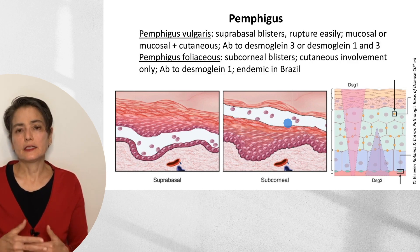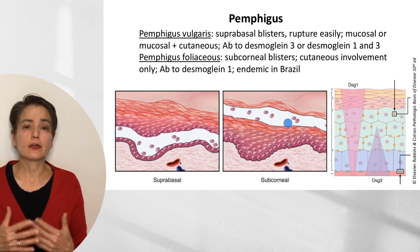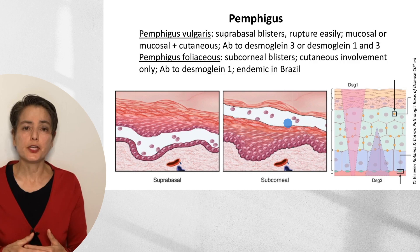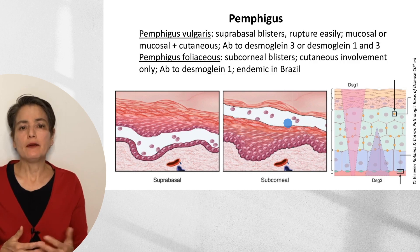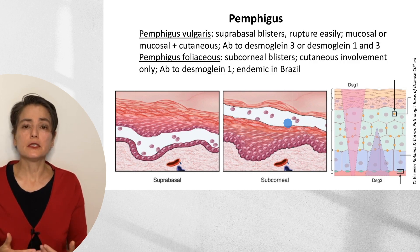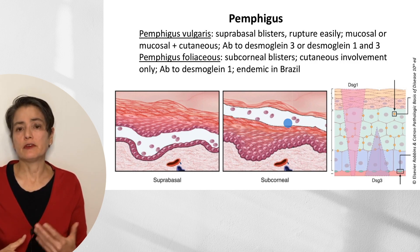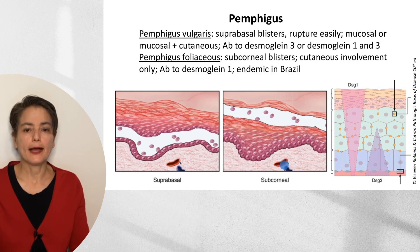One thing to know about these diseases is that they have a global distribution. However, pemphigus foliaceous is endemic in Brazil, thought to be an intersection of environmental and genetic background.